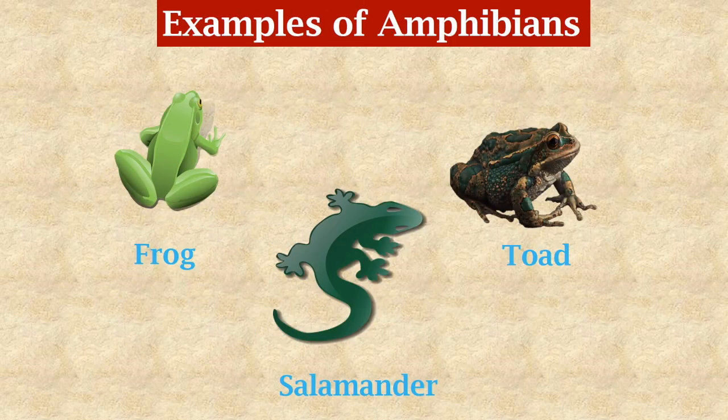Frog, salamander, and toad are well-known amphibians.